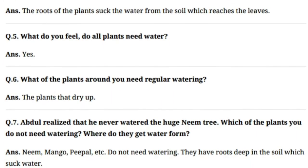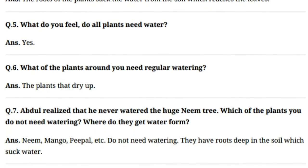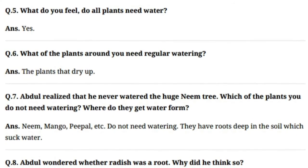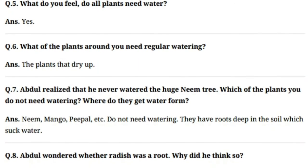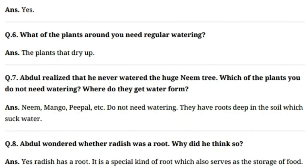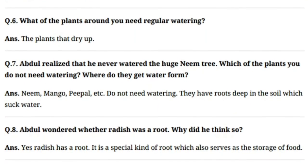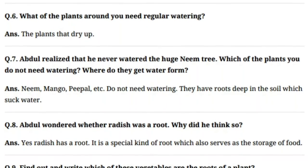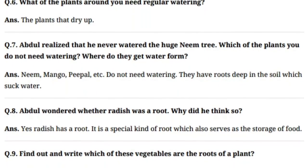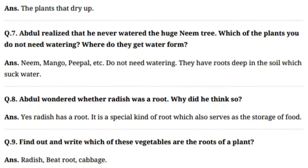Abdul wondered whether radish was a root. Why did he think so? Answer: yes, radish has a root. It is a special kind of root which also serves as storage of food. Find out and write which of these vegetables are the roots of a plant. Answer: radish, beetroot, and cabbage.